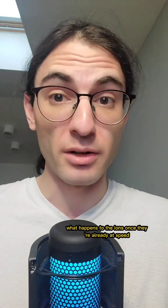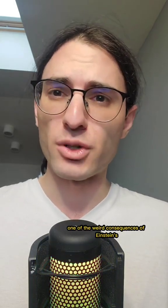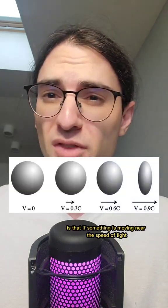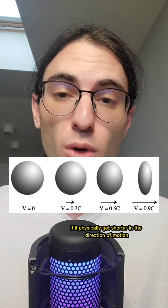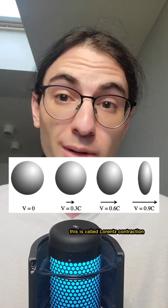What's particularly fascinating here is what happens to the ions once they're already at speed. One of the weird consequences of Einstein's special relativity is that if something is moving near the speed of light relative to you, it'll physically get shorter in the direction of motion. This is called Lorentz contraction.